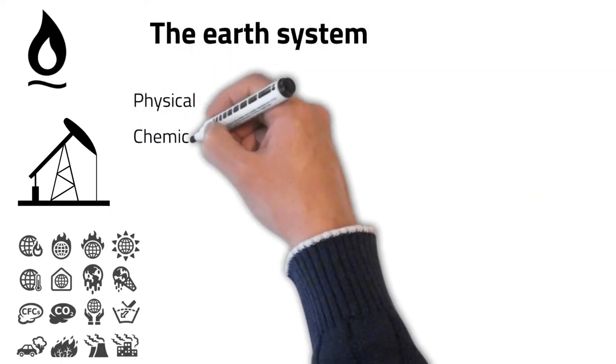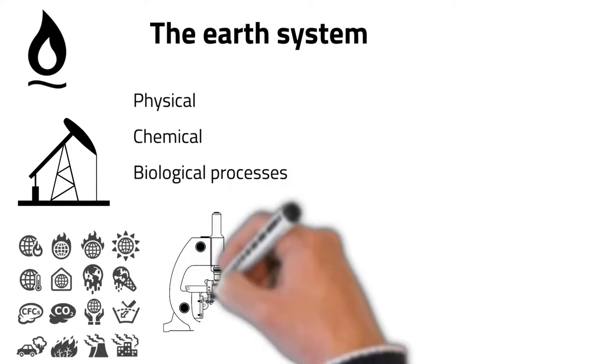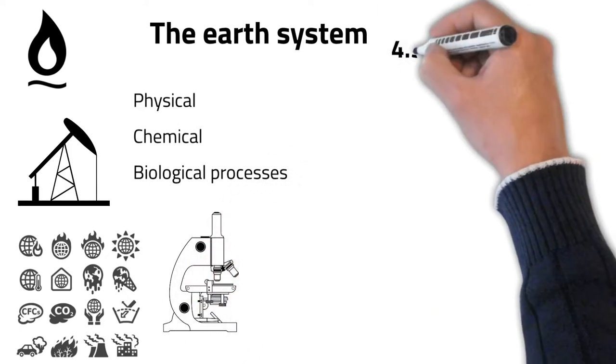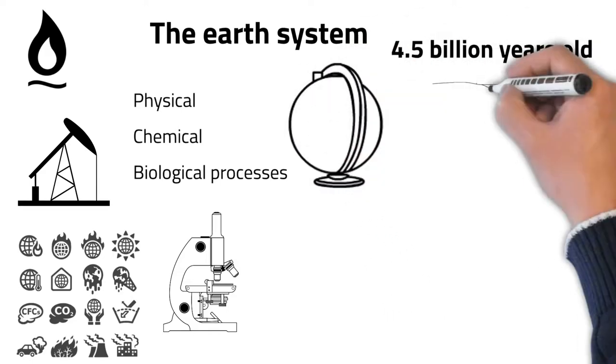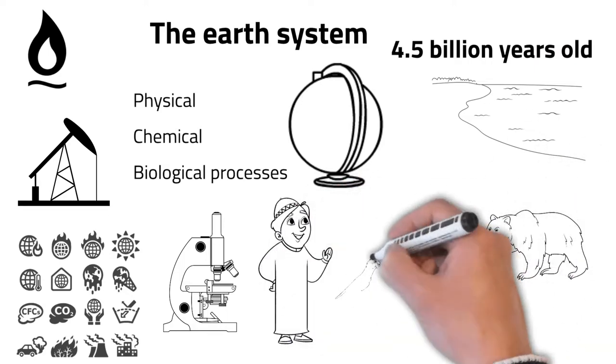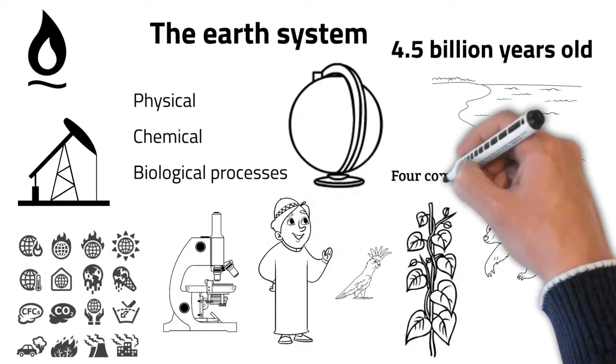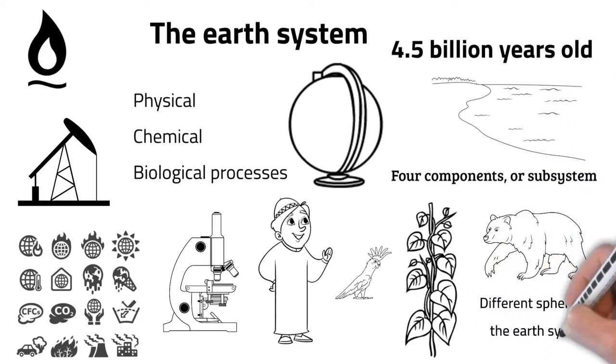Earth is a complex system of interacting physical, chemical and biological processes and provides natural laboratories whose experiments have been running since the beginning of time. Our Earth is roughly 4.5 billion years old and it is the only planet in our system to have surface liquid water. Also, it is home to the only known life in the universe. Earth is a dynamic system composed of four main highly interacting components or subcomponents and we call them different spheres of our Earth system.